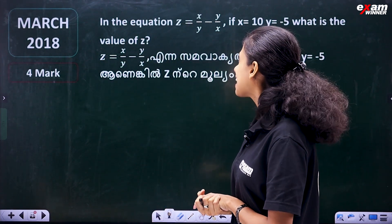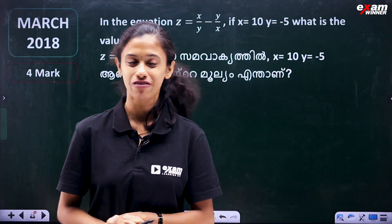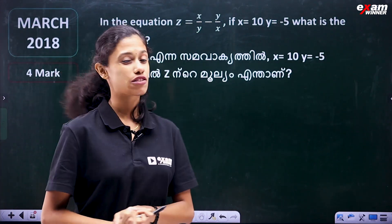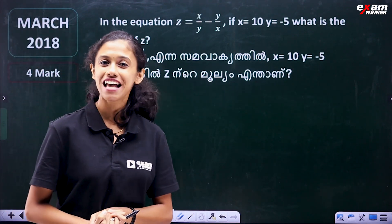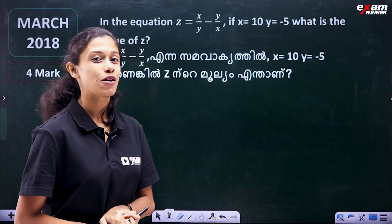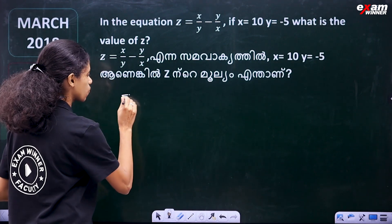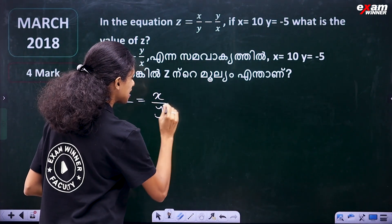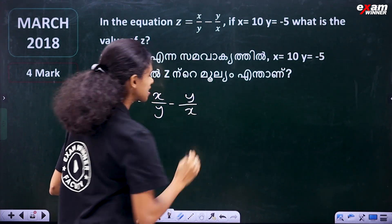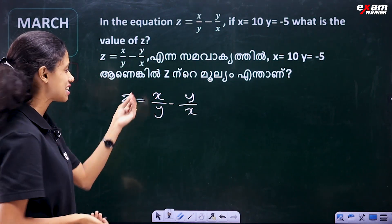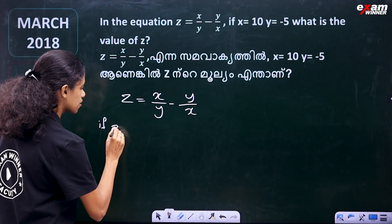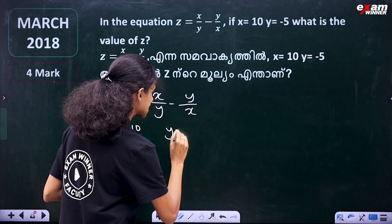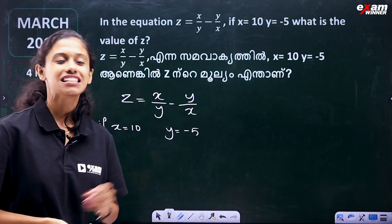In the equation, z is equal to x by y minus y by x. If x is equal to 10 and y is equal to minus 5, what is the value of z?